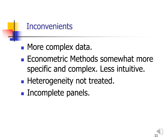There are some inconveniences in using panel data. One is that the data are more complex — it takes more time to fix, arrange, clean, and filter the data. Another inconvenience is that the econometric methods are somewhat more specific and complex, less intuitive, and when heterogeneity is not treated, that may lead to inconsistency. We also have a problem with incomplete panels — sometimes some panels have missing individuals, missing years, or missing years for specific individuals — which is a complication that can be dealt with.